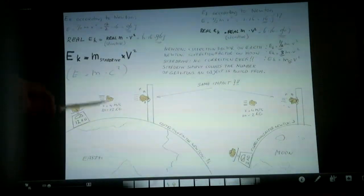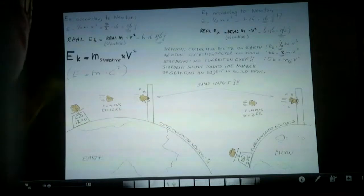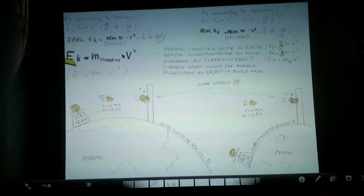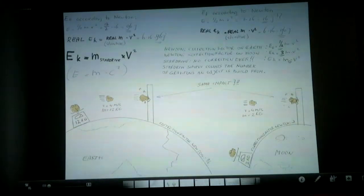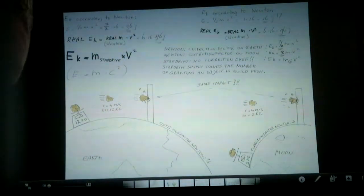So in effect, what happens, he corrected this formula. Instead of a real formula for kinetic energy, he said it is half M times V squared, because his scale was wrong. Scales are wrong. When your scale says you weigh 80 kilograms, your real mass is only 40. So scales are wrong.